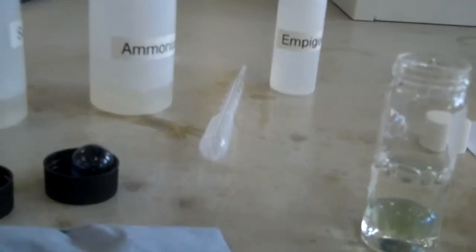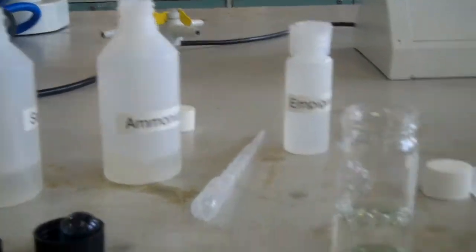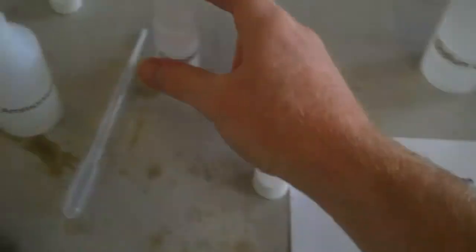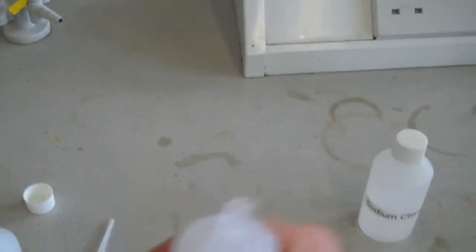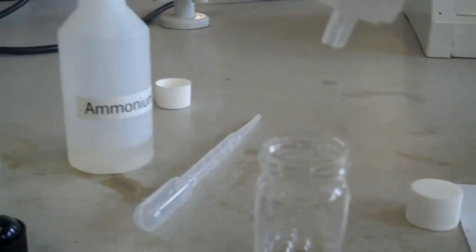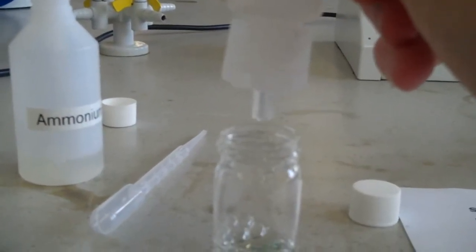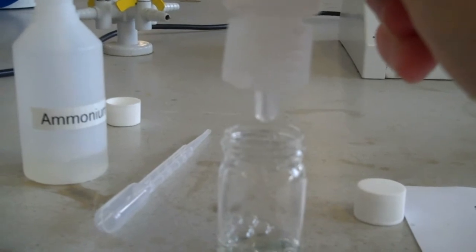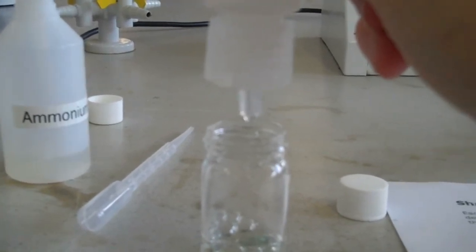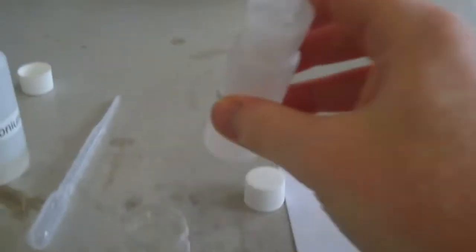And the other one, it says seven drops of empygen. Now empygen, I don't need a pipette for, because it's got a special dropper on the top. So I'm going to add seven drops. One, two, three, four, five, six, seven. Like so.